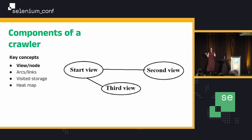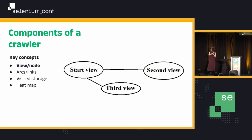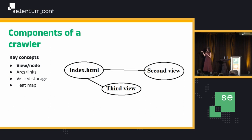So what are the components of a crawler? I keep talking about views — what is a view? The views are usually called nodes in graph terminology, but I'm calling them views because we're working towards an application. Your application can be represented through a graph — there's going to be a starting view, a second view, a third view, and something that connects them. For a web application, a view could be a URL — it could be an index.html.